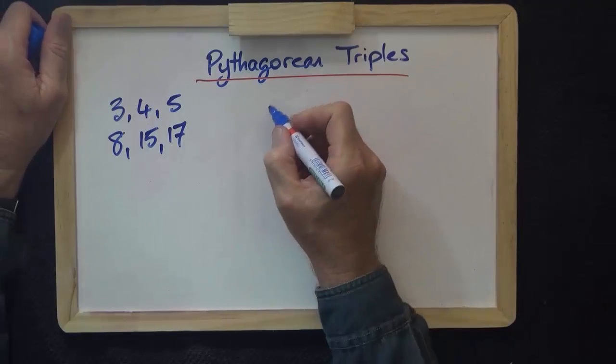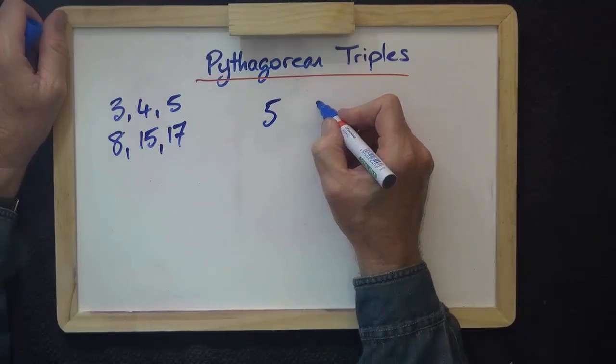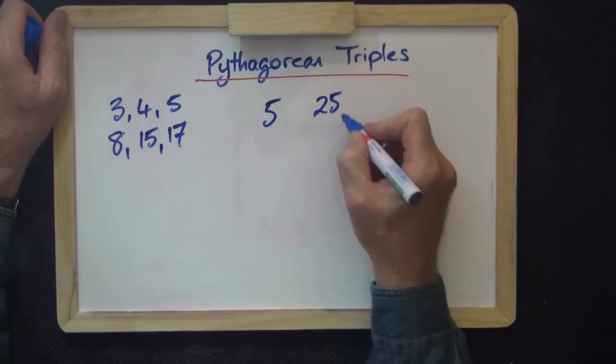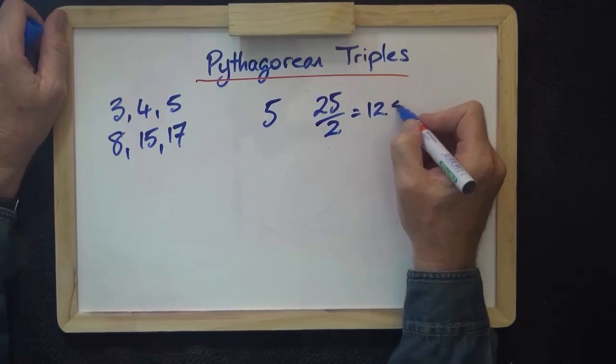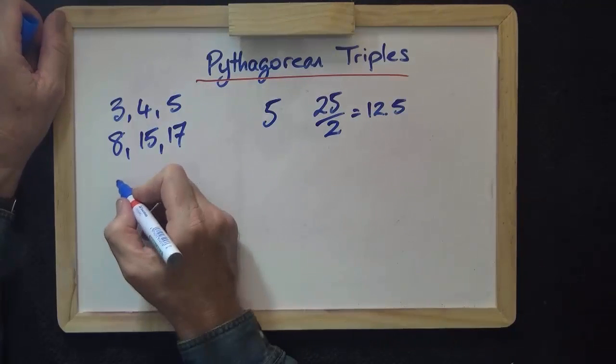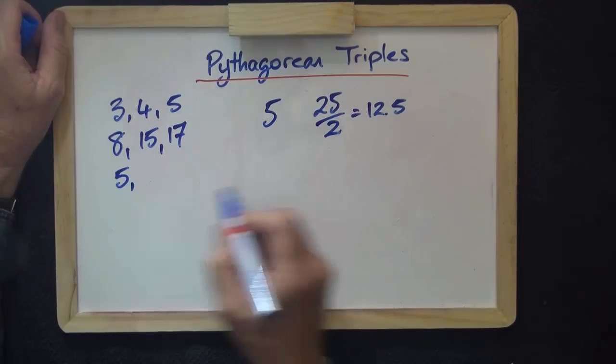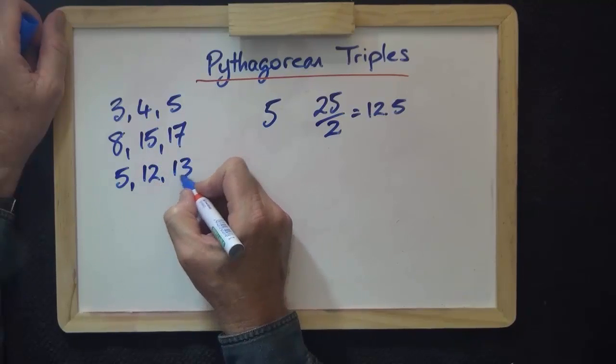So if I take 5, it's an odd number. I square it. I get 25. I halve it. I get 12.5. The Pythagorean triple is 5, 12, 13.